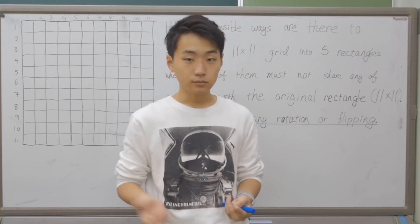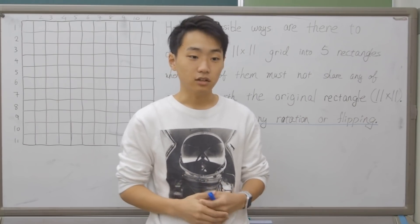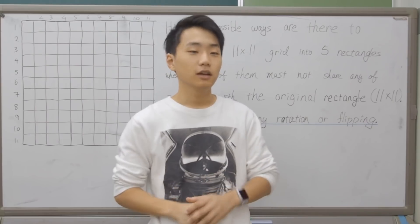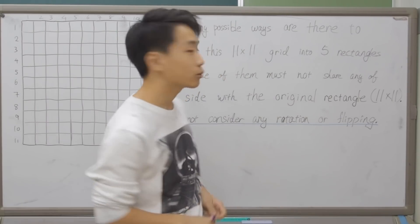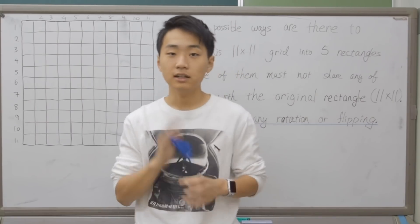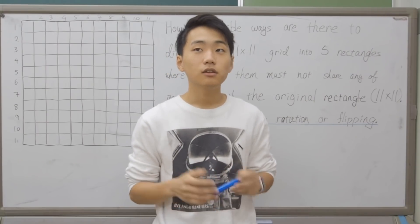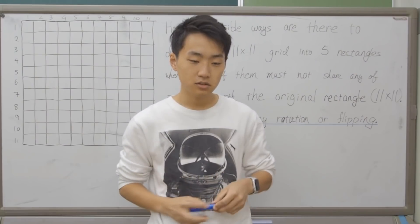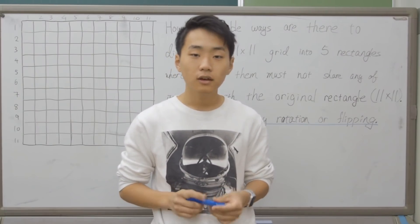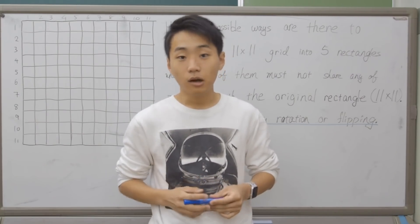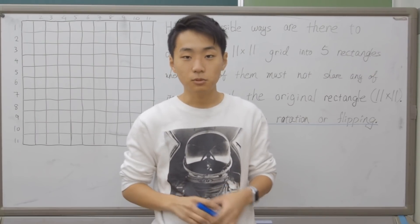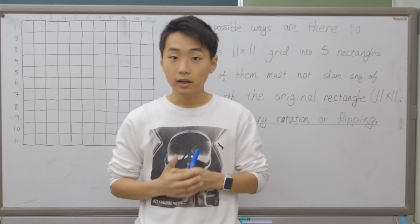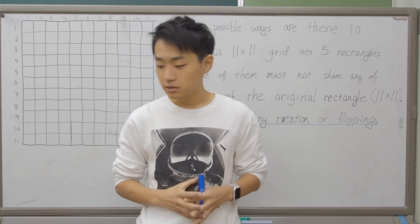If you want to pass the first round, you have to answer at least four, five, or six — it depends on the year. Nobody can actually solve all 12 problems because it's too hard. This question I brought here is from 2016, question five, so it's meant to be the fifth hardest amongst the 12. But actually it's quite easy, so that's why I chose this question today.